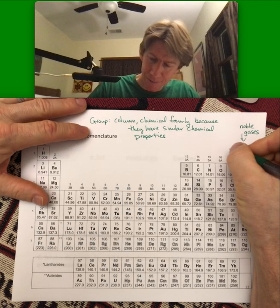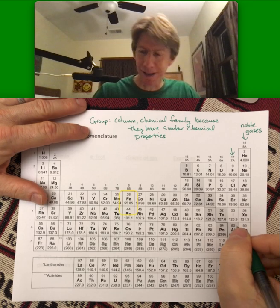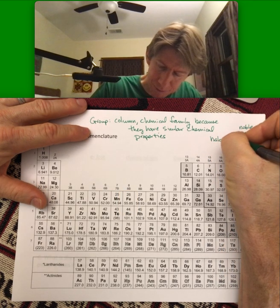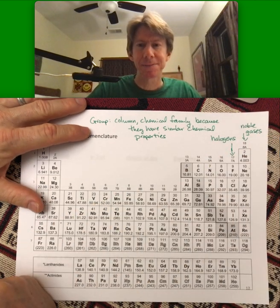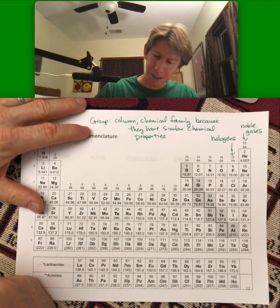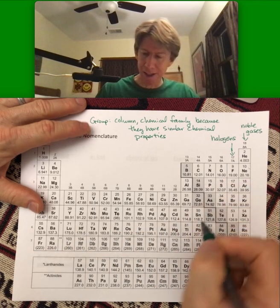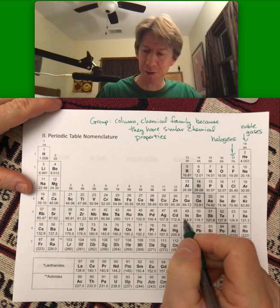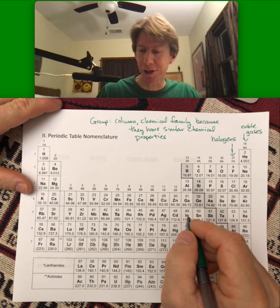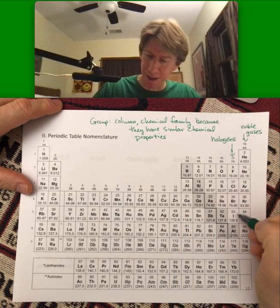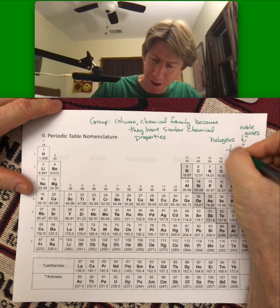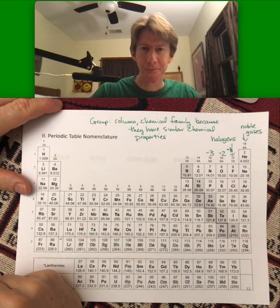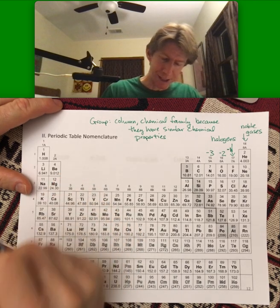Now here, the next column over, that's called the halogens. And then the other columns here don't really have names. They do still have similar chemical properties, and if you remember we talked about the charges of ions. This column right here was always minus one, this column was always minus two and minus three.